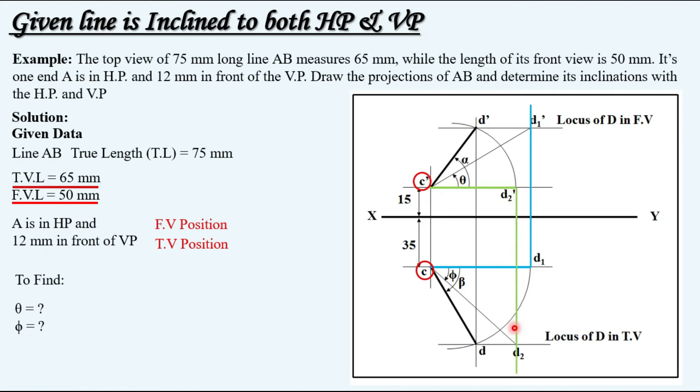After this we have the true length with us. So taking true length 75 mm in the compass, keeping compass at this front view position and cutting an arc on this vertical projector we will be having this, and similarly keeping the compass on top view location cutting an arc on this vertical projector we will be having this point located.